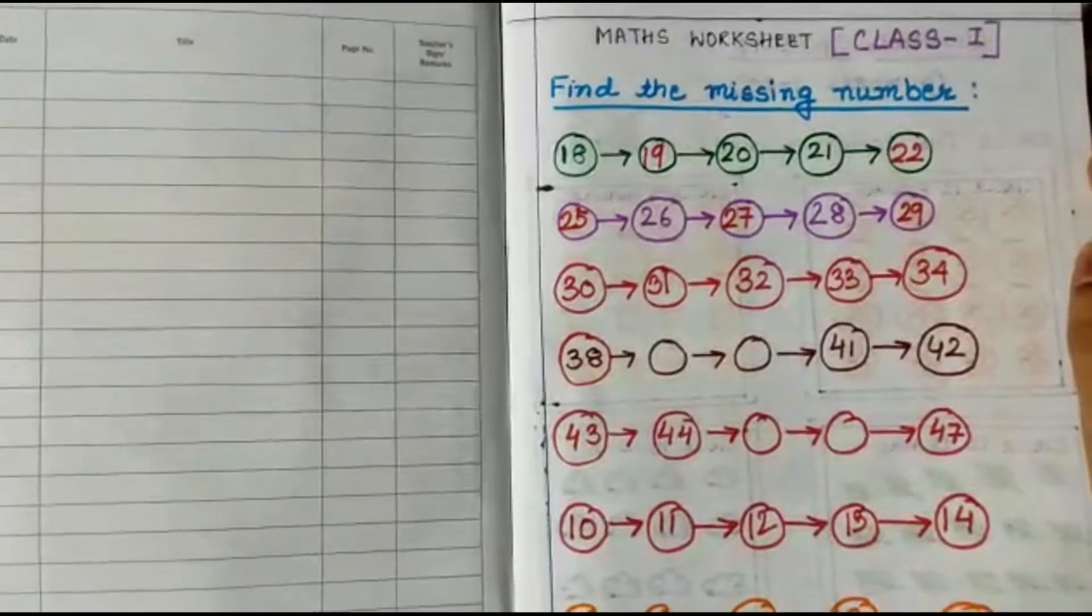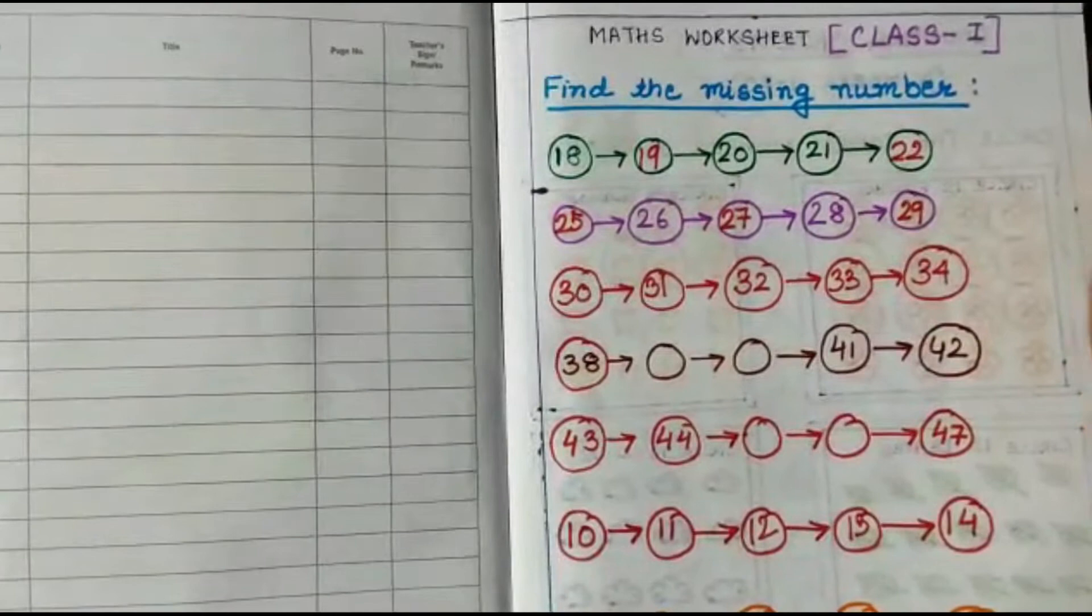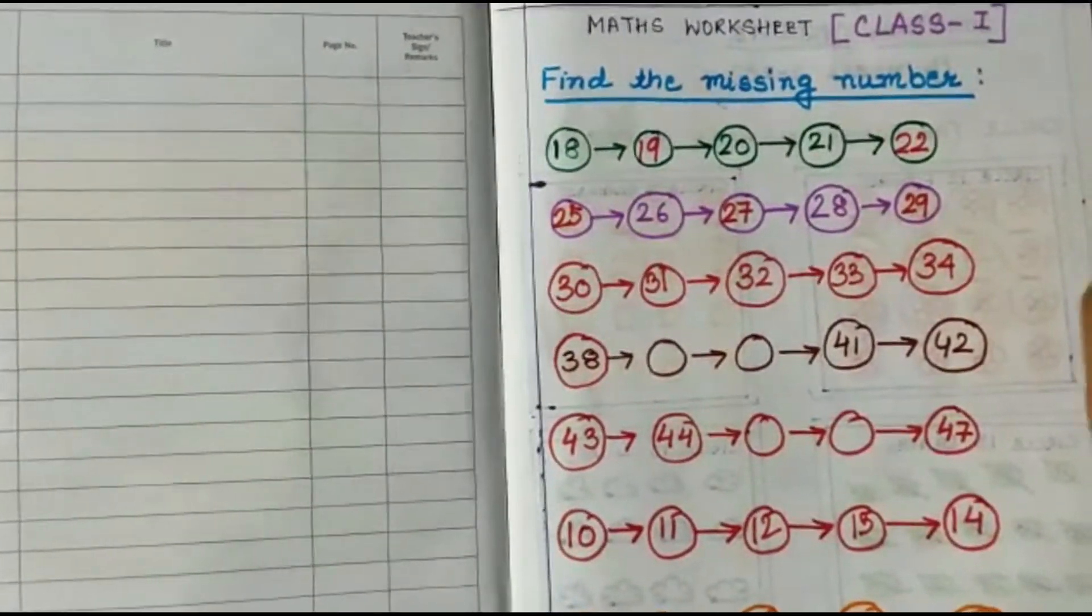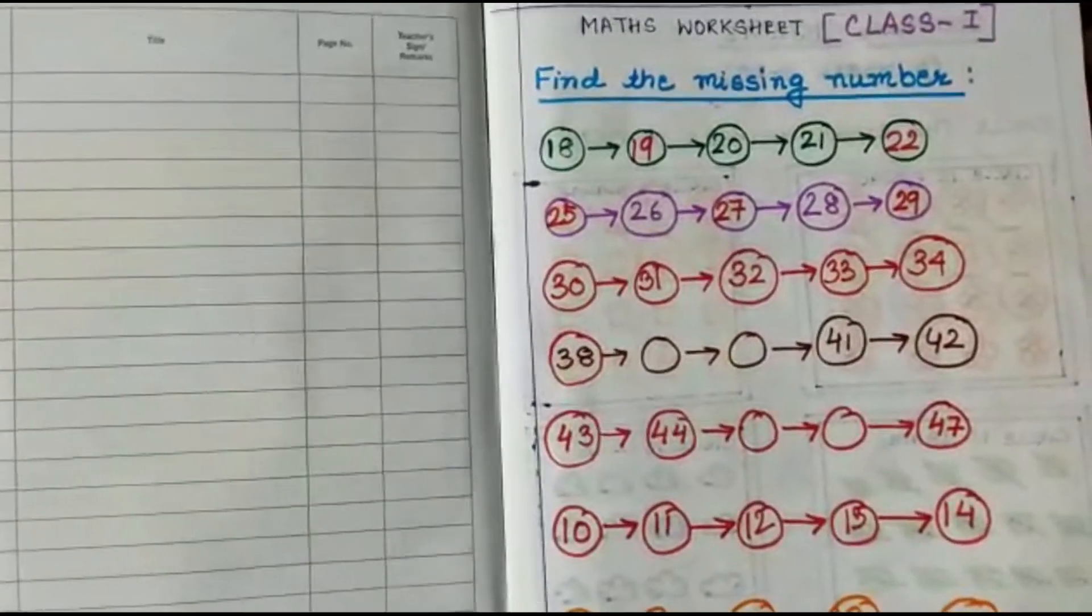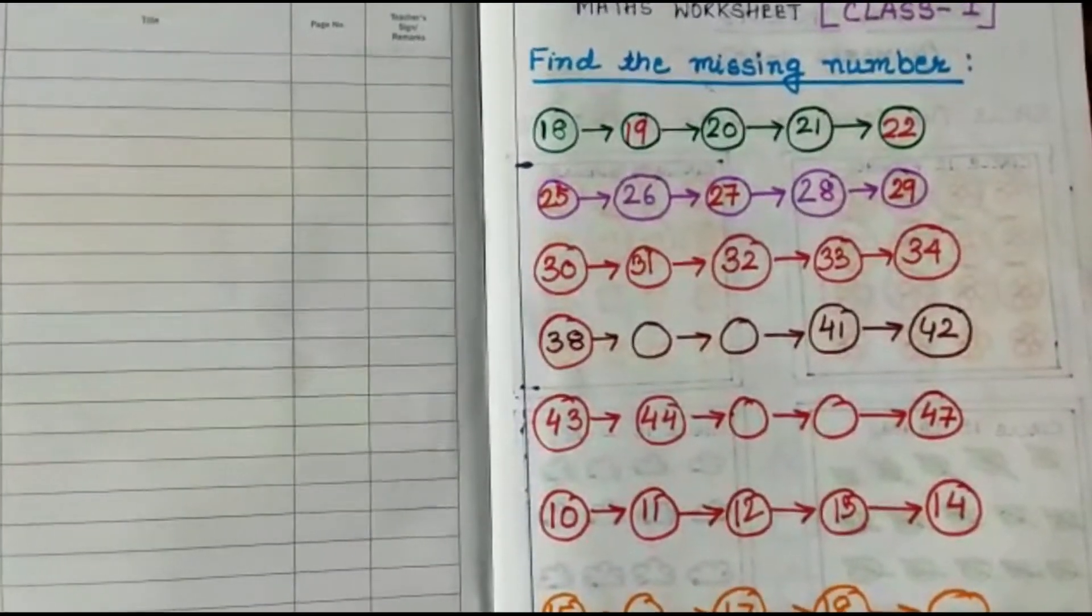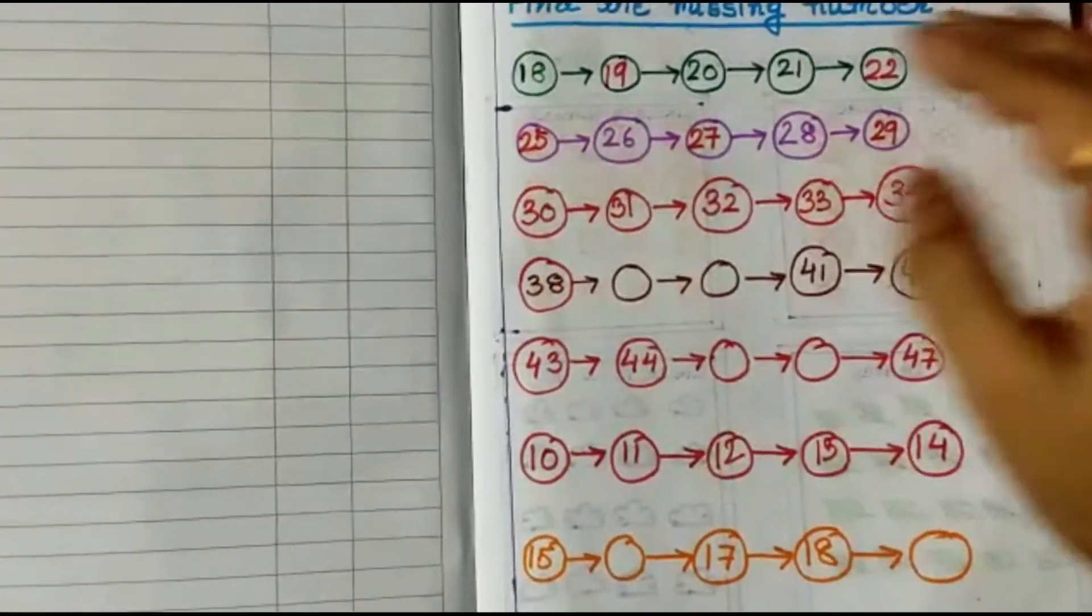Let's start with the first worksheet for class 1. Subject is Maths, so this is the first topic for class 1 which is counting. We have the question to find the missing number. This is the first question in the worksheet.